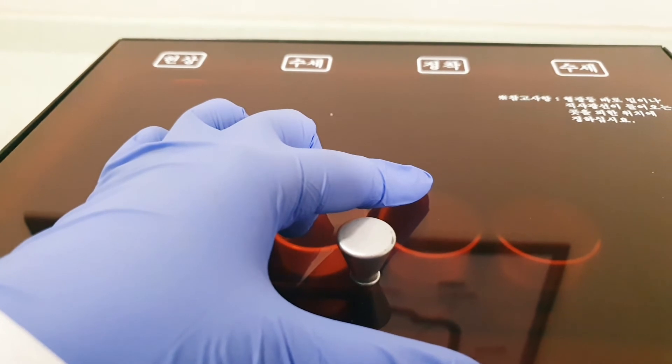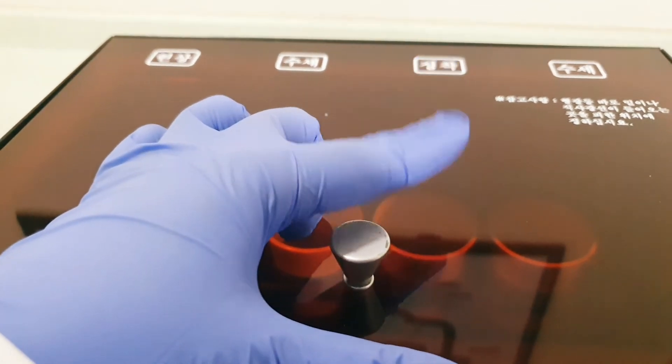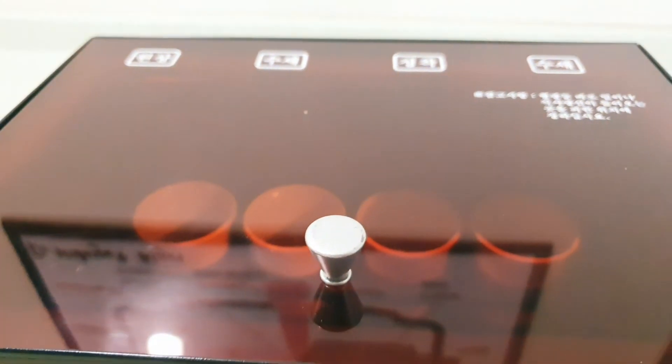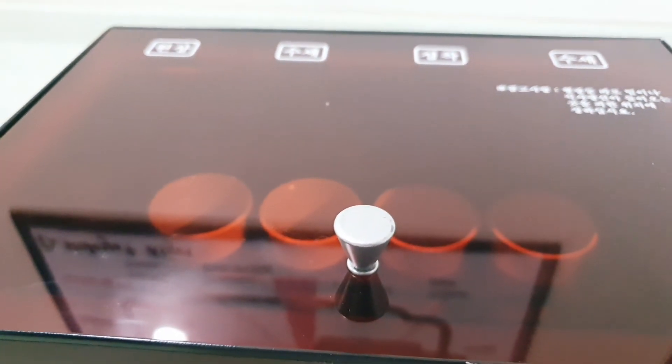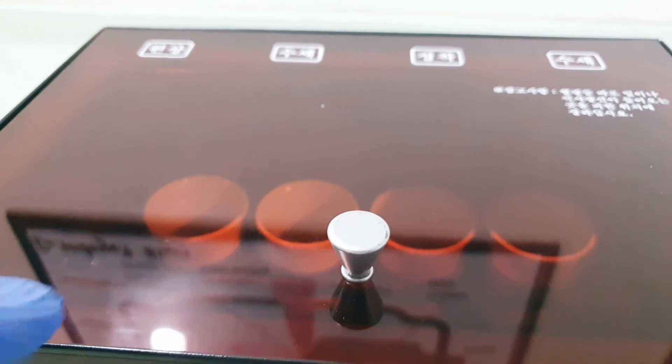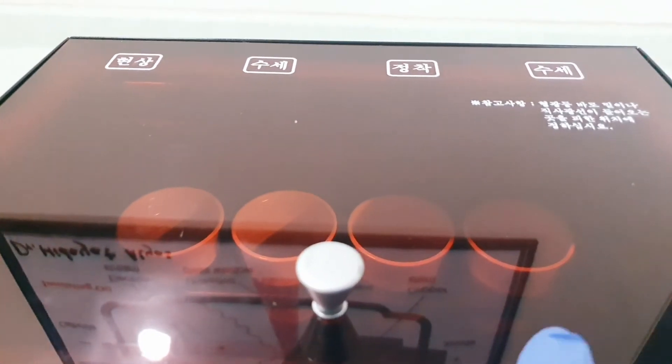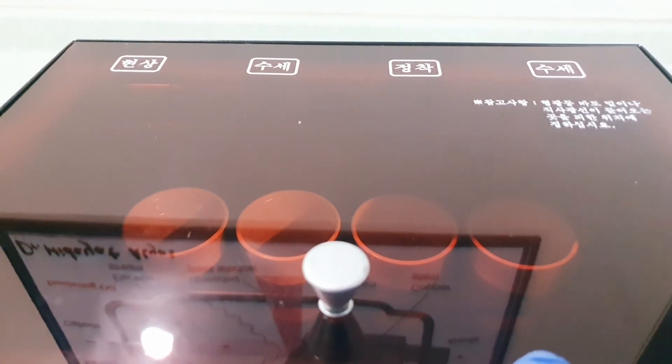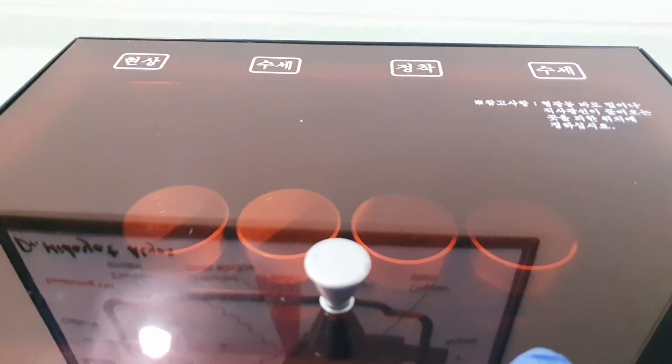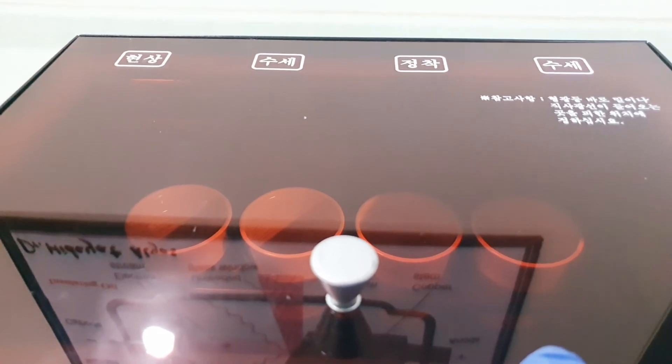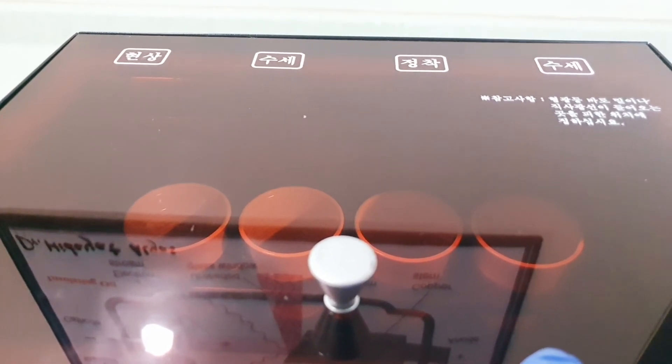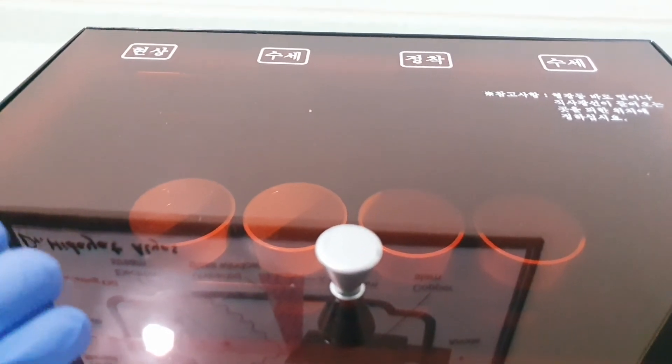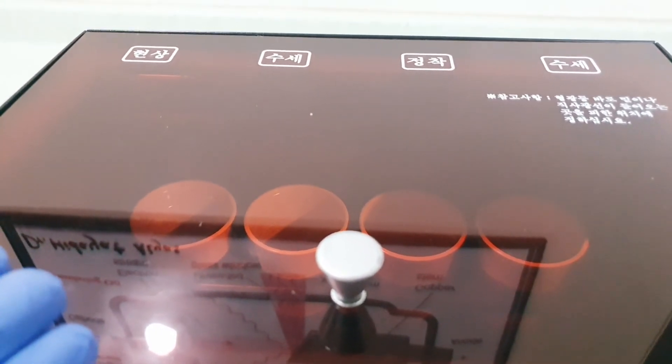After fixing, there should be no white areas visible when viewed under the red-tinged glass. If white areas are still visible, keep it in the fixer longer. When you see only black and bluish translucent areas under the red-tinged glass, fixing is complete.